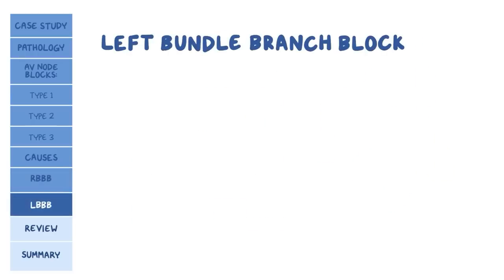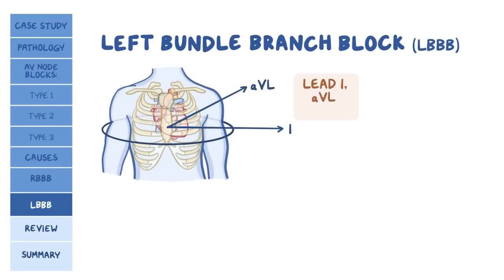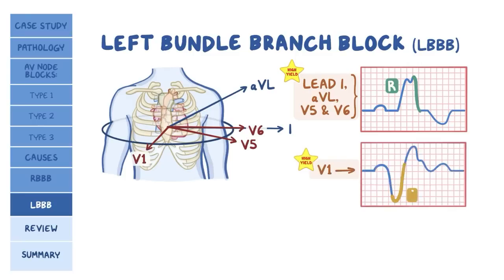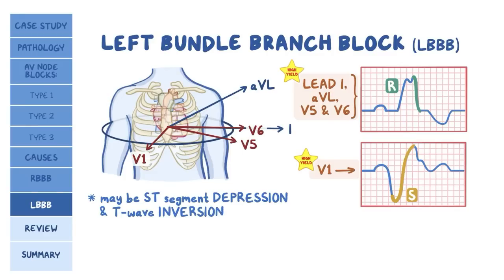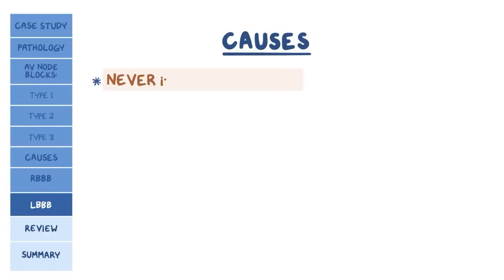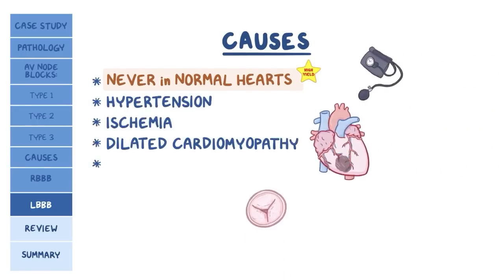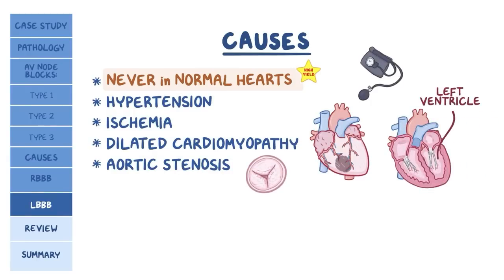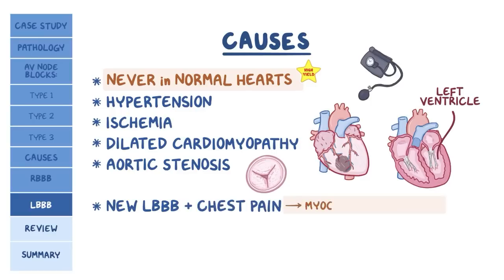In left bundle branch block, or LBBB, the QRS complexes will be wide because of the delay in ventricular depolarization. In leads 1, AVL, V5, and V6, tall R waves are present, and in lead V1, broad deep S waves are characteristic. Additionally, there may be ST segment depression and T wave inversion. Unlike RBBB, LBBB never occurs in normal hearts, so there's always something wrong. Examples include hypertension, ischemia, dilated cardiomyopathy, and aortic stenosis. Importantly, a new LBBB in an individual presenting with chest pain may be a sign of myocardial infarction.